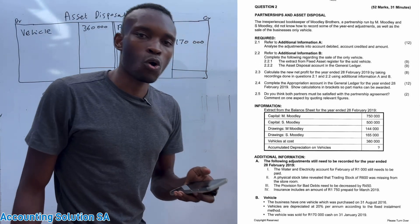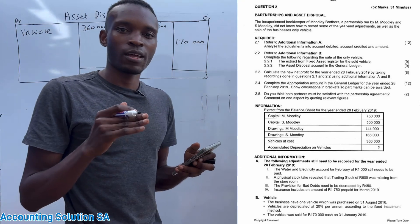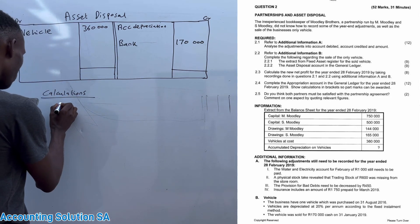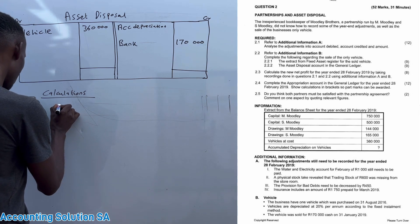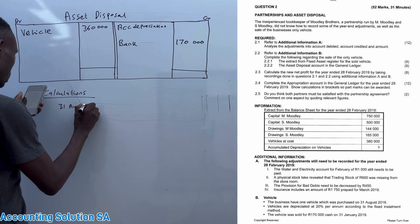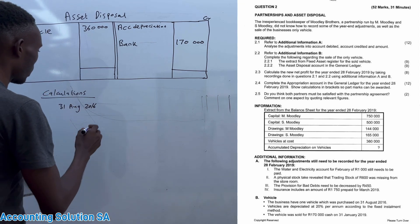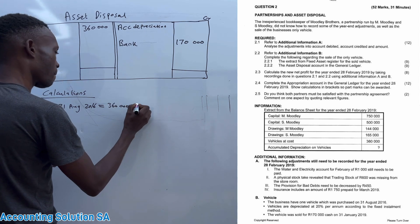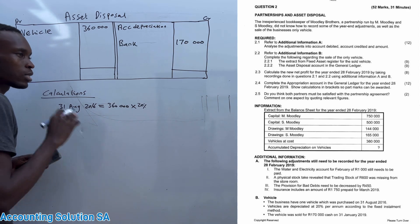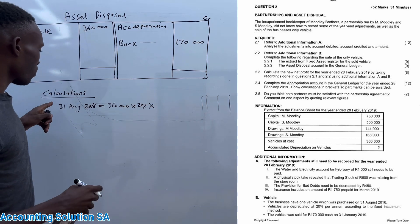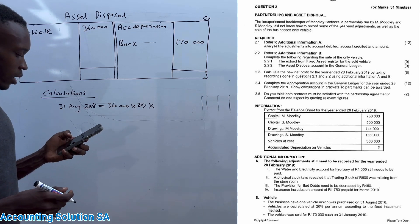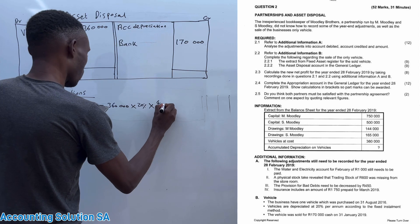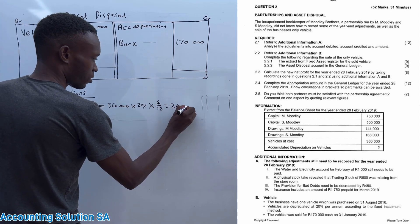Now we need to determine whether it's a loss or profit, but first we have to calculate the depreciation because we don't have it at all. We have to start from the day the vehicle was purchased until the day it was sold, so this calculation is going to be a bit long. It was purchased on 31 August 2016. So: 360,000 × 20% — we don't subtract depreciation because it's the straight-line method. Counting from 31 August to December gives us September, October, November, December — that's 4 months, so × 4/12, giving us 24,000 for 2016.